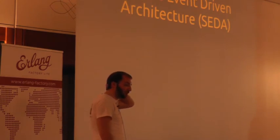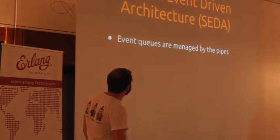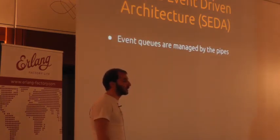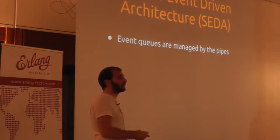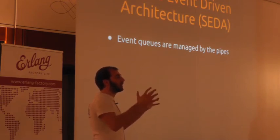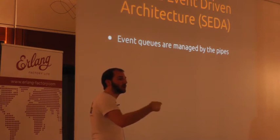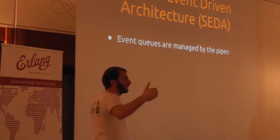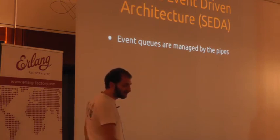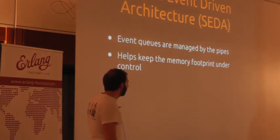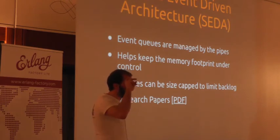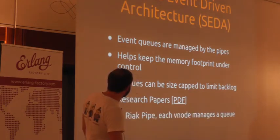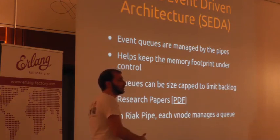All of this is based on research work by Eric Brewer and others in the distributed systems community — based on the staged event-driven design architecture. Event queues are managed by the pipes. Queues are attached to every V node, which allows you to apply back pressure if a compute task is taking longer on one particular fitting than the rest. You can have some control over the amount of back pressure across the entire system, helping to keep the memory footprint under control, and queues can be size-capped to limit the backlog. The research paper is linked in the slides — please do read it, as it explains a lot of the design decisions behind Pipe.